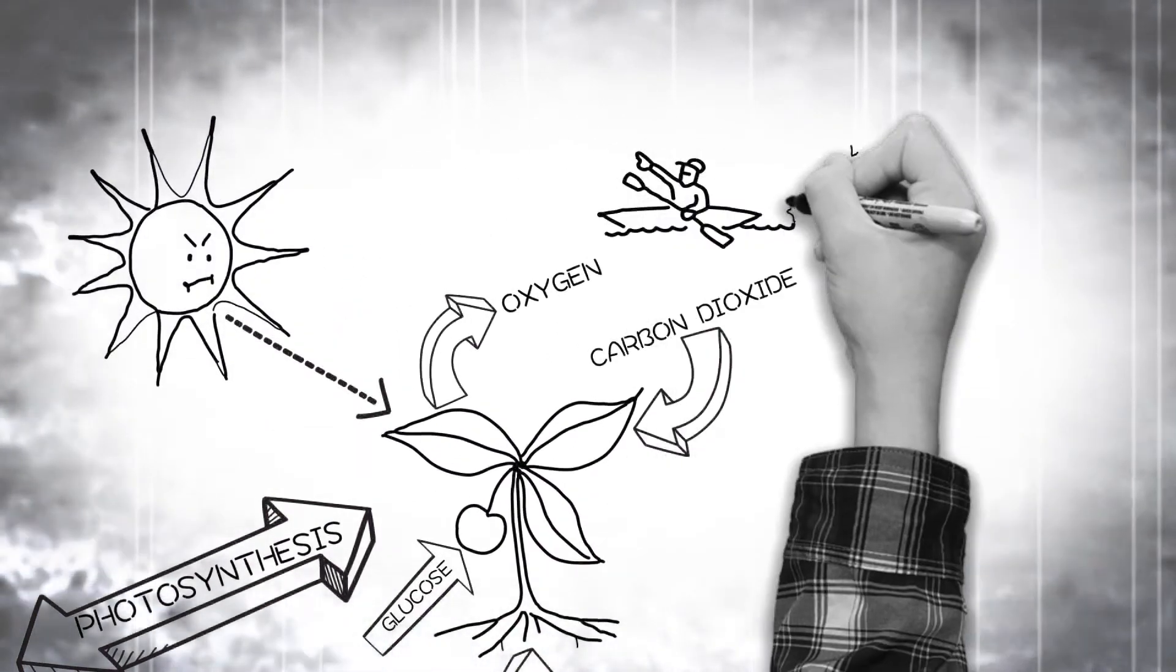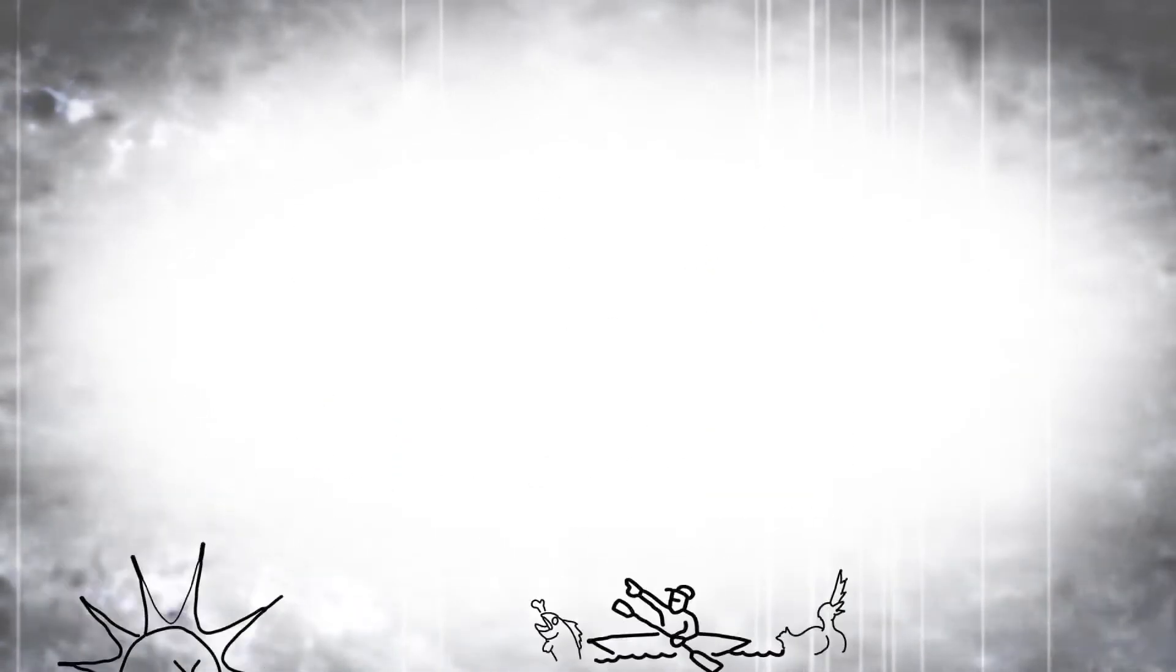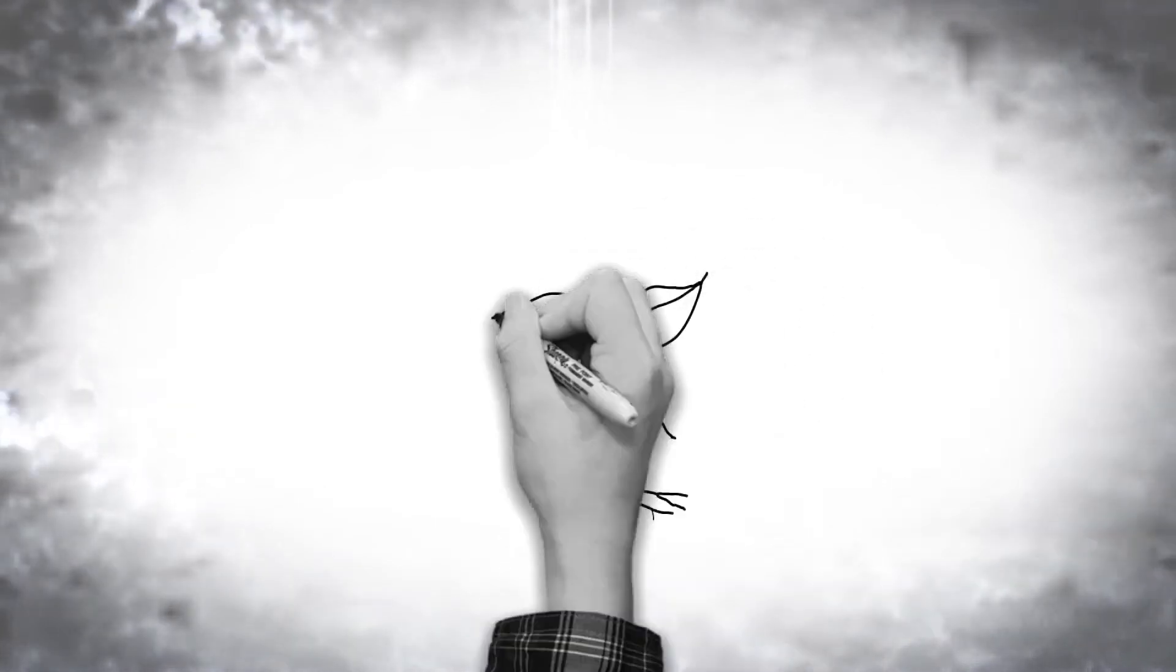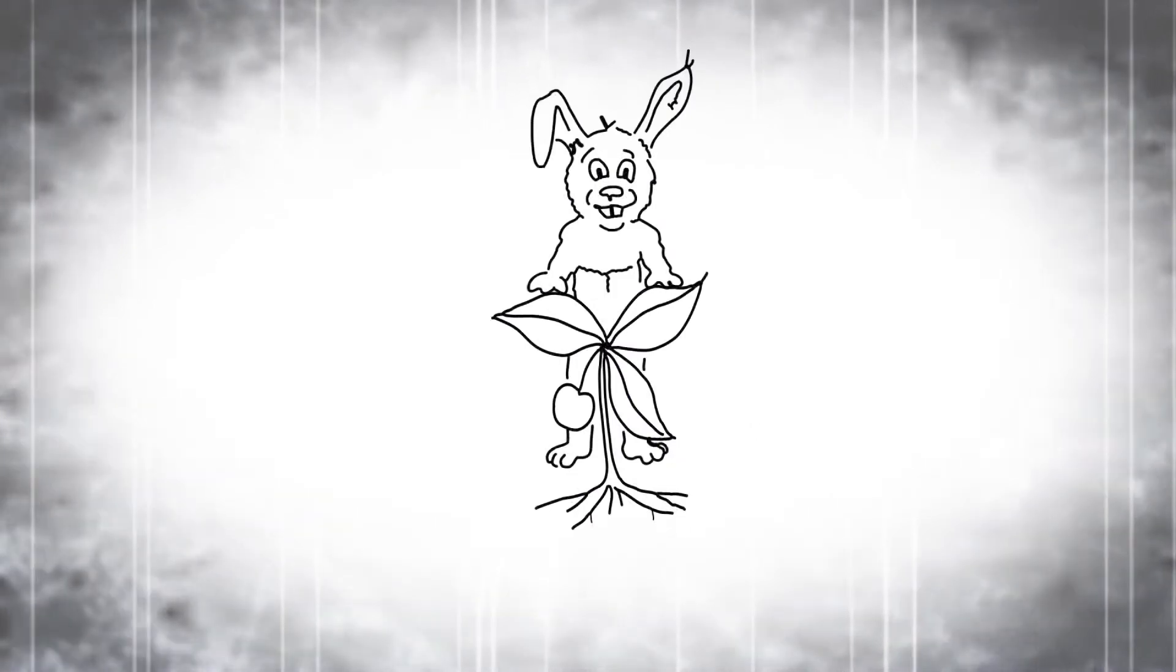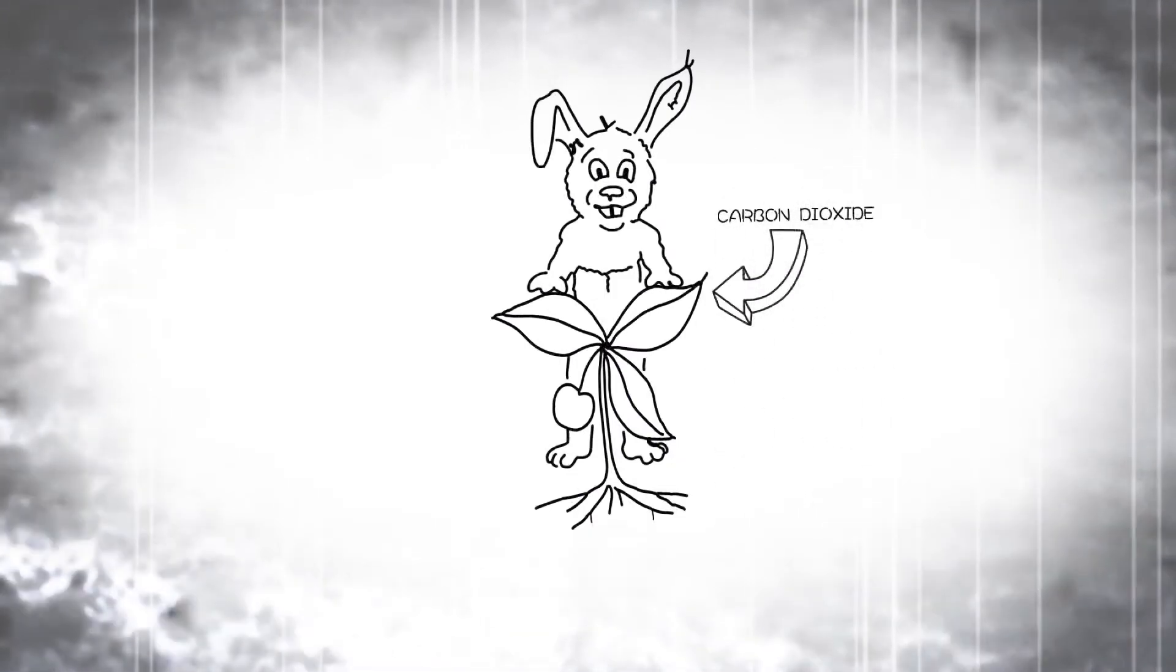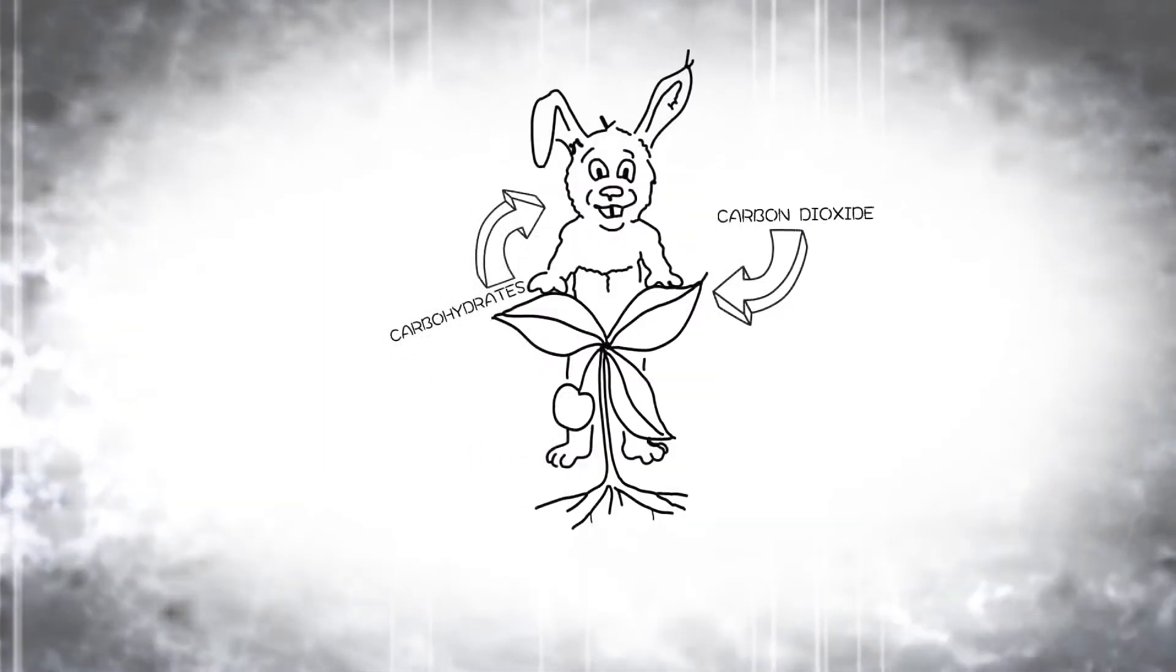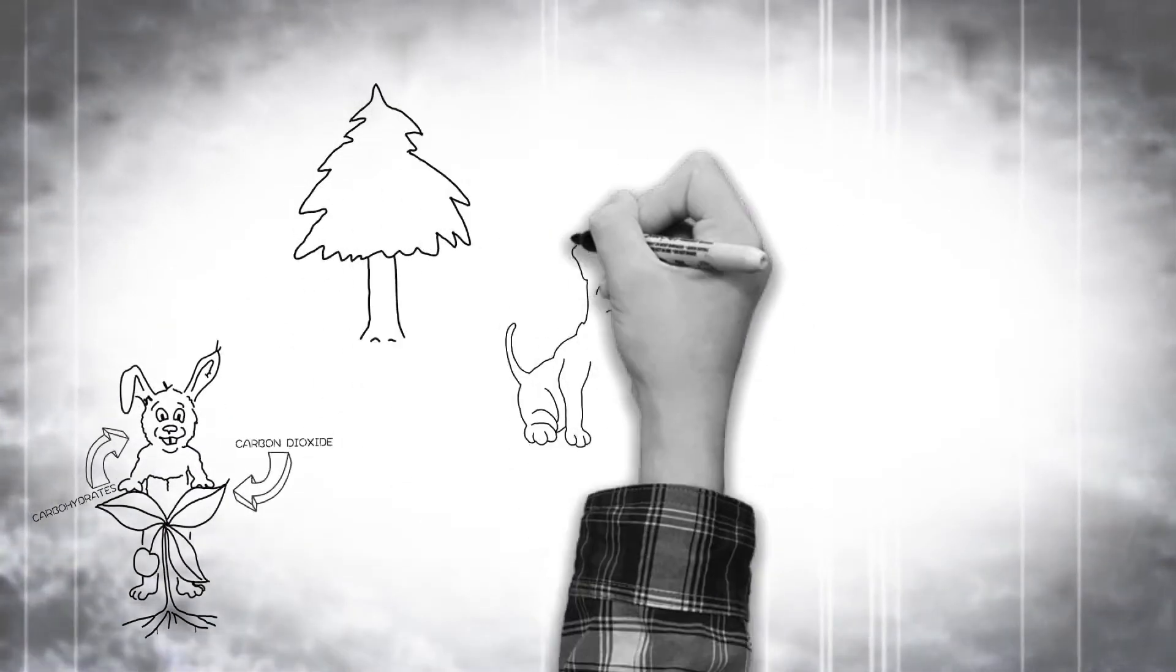And those two things allow everything else on the planet to create and sustain life. Pretty cool, huh? So really, no matter what you eat or what living thing you see, cool and green or warm and furry, they're all really created from atmospheric carbon dioxide that was converted into various carbohydrates.